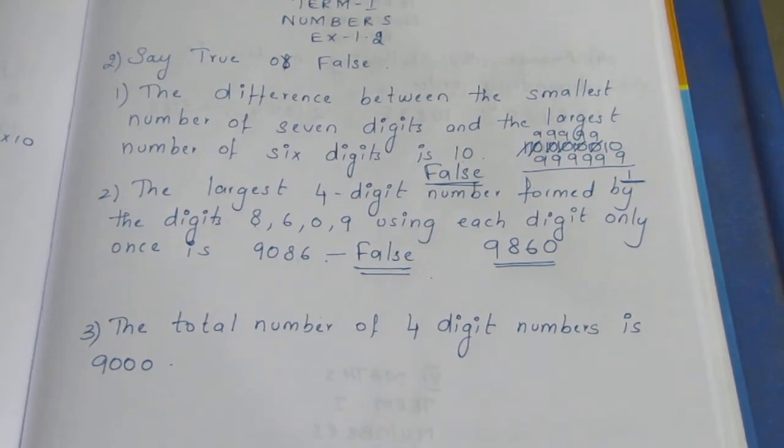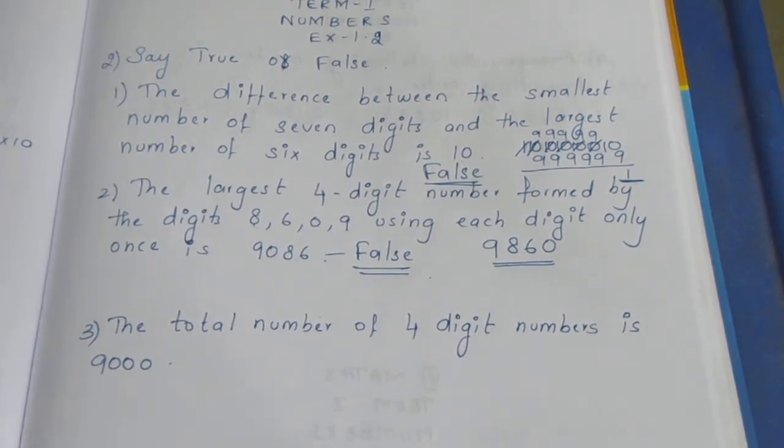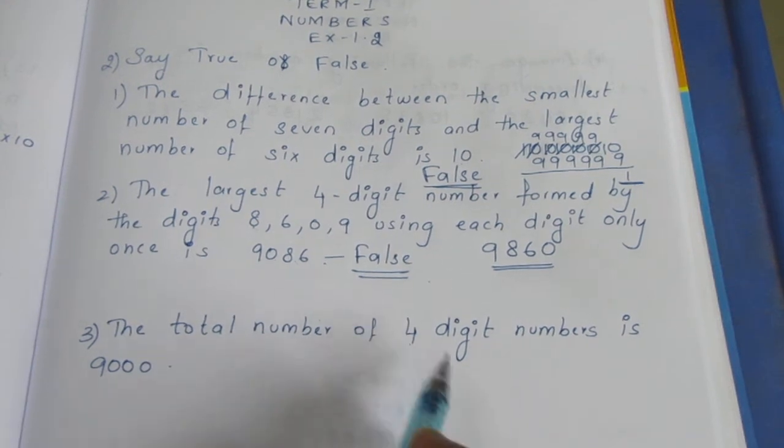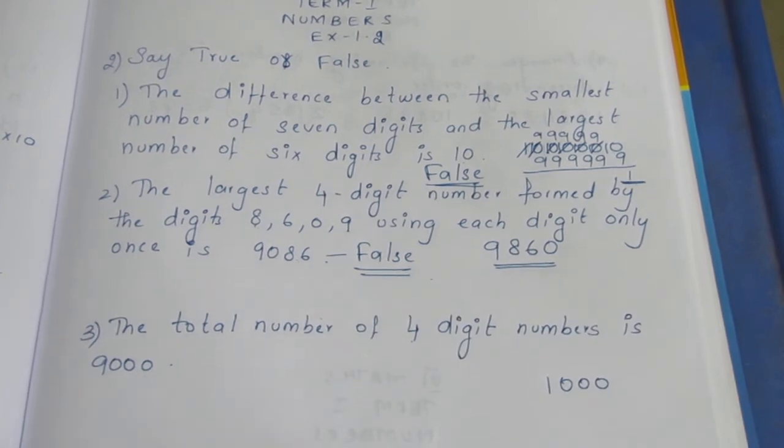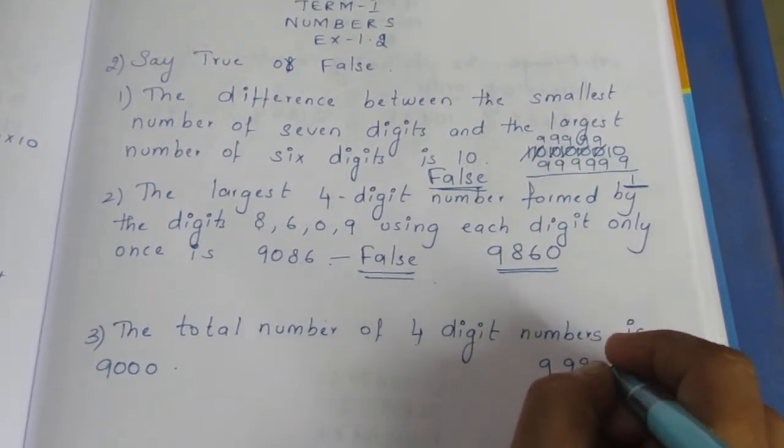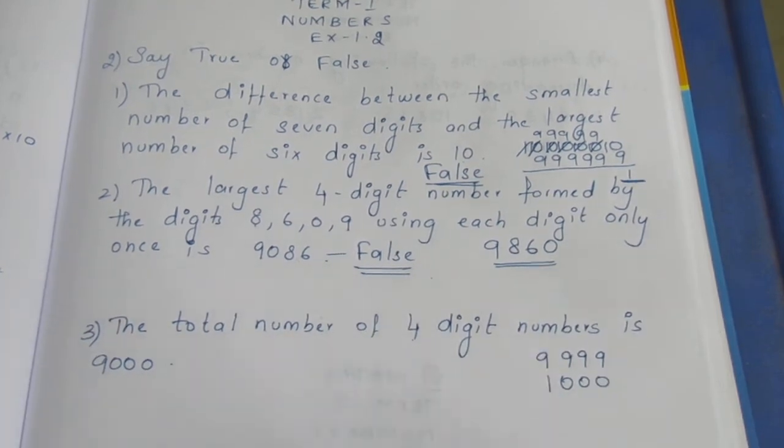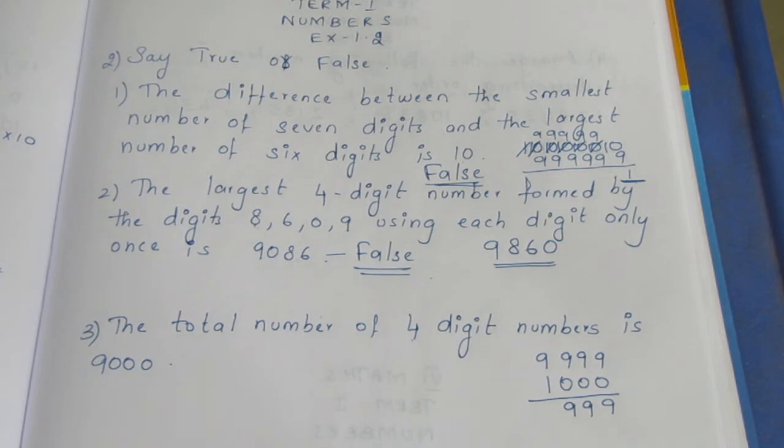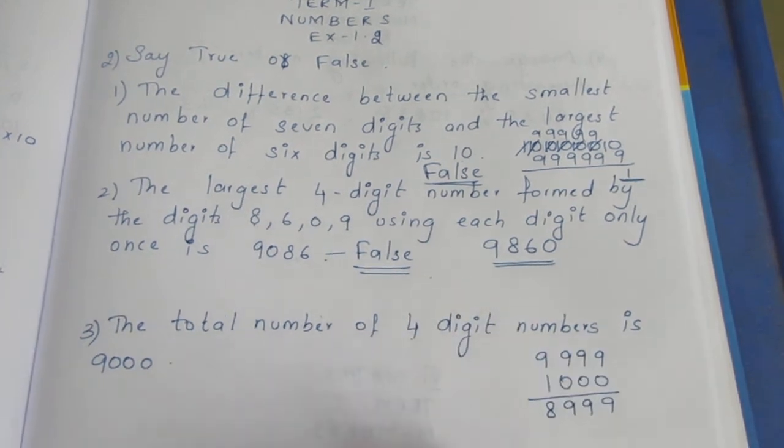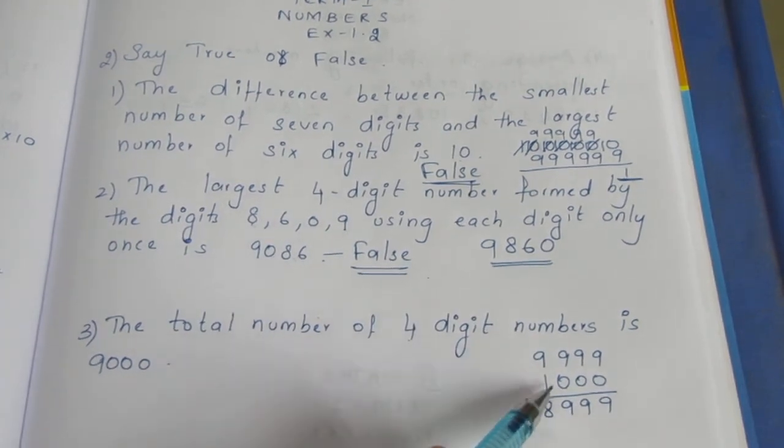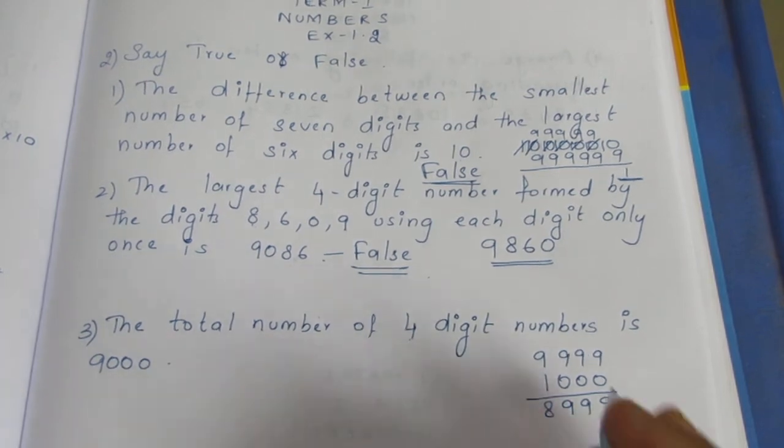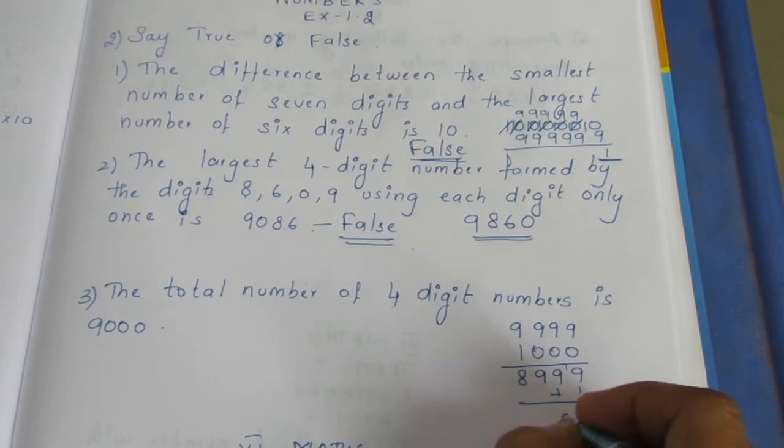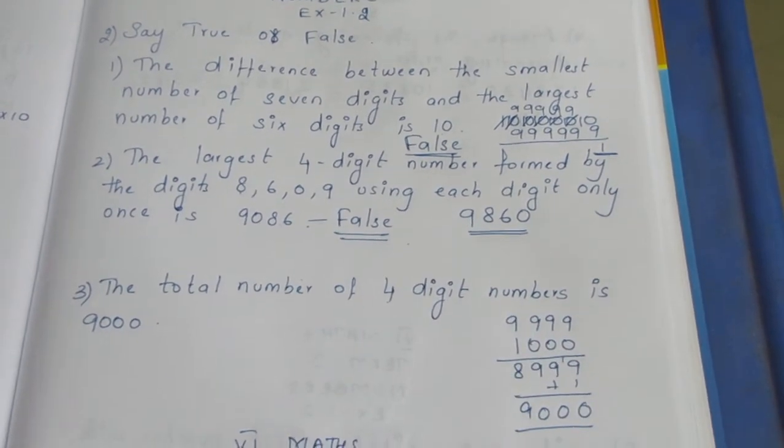Third problem: the total number of 4-digit numbers is 9000. To verify, subtract 9999 minus 1000 equals 8999. Then add 1 to include the starting number.